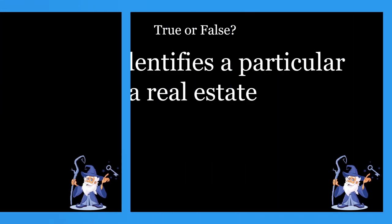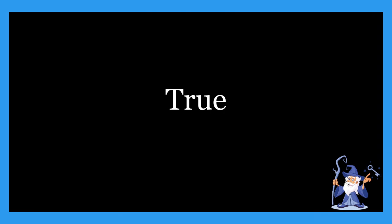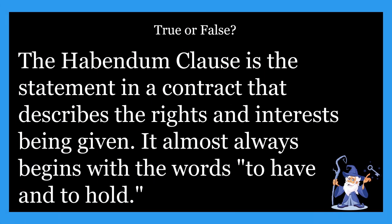Next one: a clause identifies a particular section of a real estate contract. Is that true or it false? This statement is definitely true. A clause identifies a particular section of a real estate contract. Check out the clause videos on the channel — they're super important to understand, because you need to distinguish which clause is which. Our next couple of questions are going to have to do with clauses.